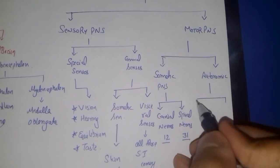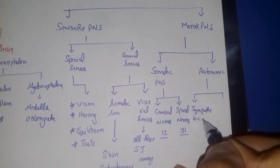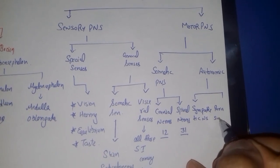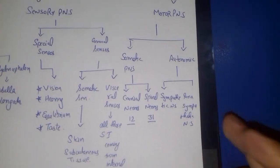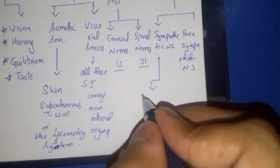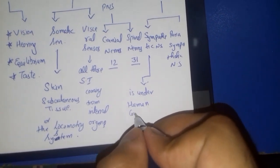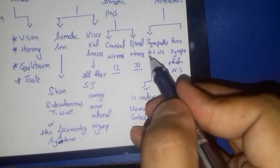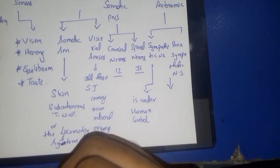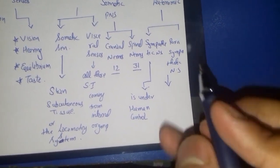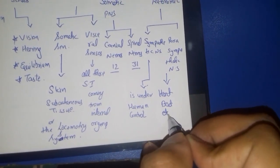The autonomic nervous system involves two further parts known as the sympathetic nervous system and the parasympathetic nervous system. The sympathetic nervous system is under human control, meaning all those movements which we can control come under it, just like joint movement. Whereas the parasympathetic nervous system usually involves all those movements which are not under human control, just like heartbeat.